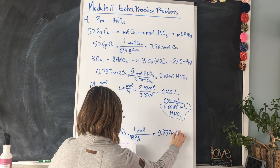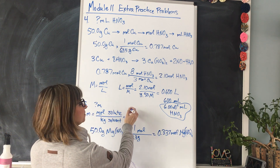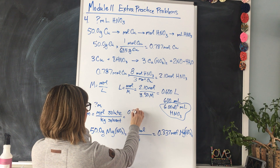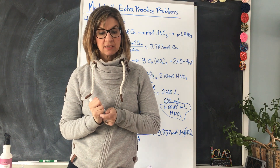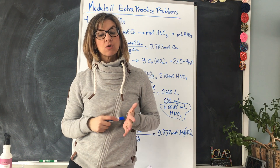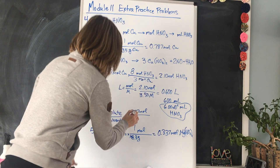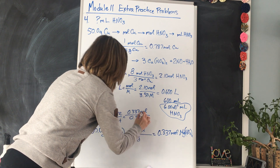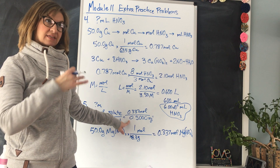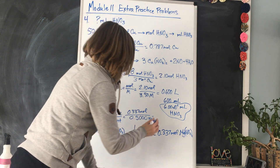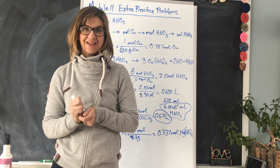50 ÷ 148.3 = 0.337 moles of magnesium nitrate. Now we know the moles of solute. Plugging into the molality formula: 0.337 moles of solute divided by kilograms of solvent. Our solvent is water; we have 500 grams, which is 0.500 kilograms. 0.337 ÷ 0.500 = 0.674 molality. That is the answer for number 5.